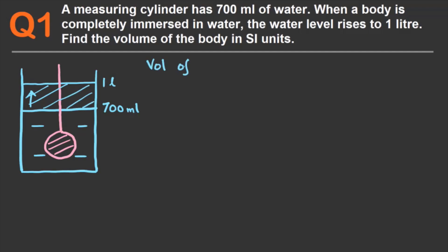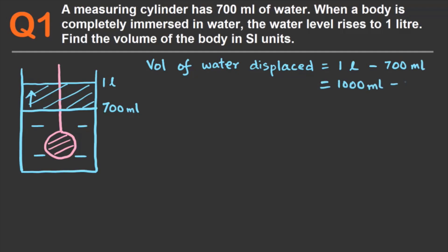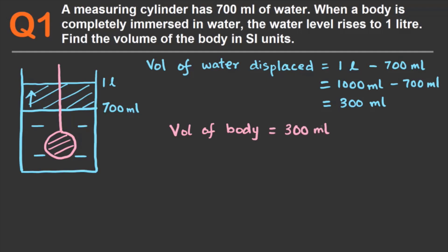The volume of water displaced is going to be one liter minus 700 ml. We know that one liter is 1000 ml, so we get 300 ml of water displaced. Since the body is completely immersed in water, from Archimedes' volume discovery we know that the volume of the body equals the volume of water displaced, which is 300 ml. But we need the volume in SI units.